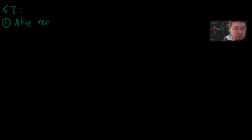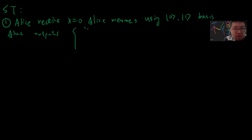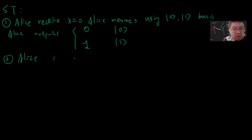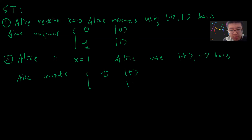Let me describe the quantum strategy. If Alice receives x = 0, then Alice measures in the standard {|0⟩, |1⟩} basis (the Z basis). She outputs 0 if she gets the |0⟩ eigenstate, and outputs 1 if she gets |1⟩. If Alice receives x = 1, she measures in the X basis — the {|+⟩, |−⟩} basis. She outputs 0 if she gets |+⟩ and outputs 1 if she gets |−⟩.